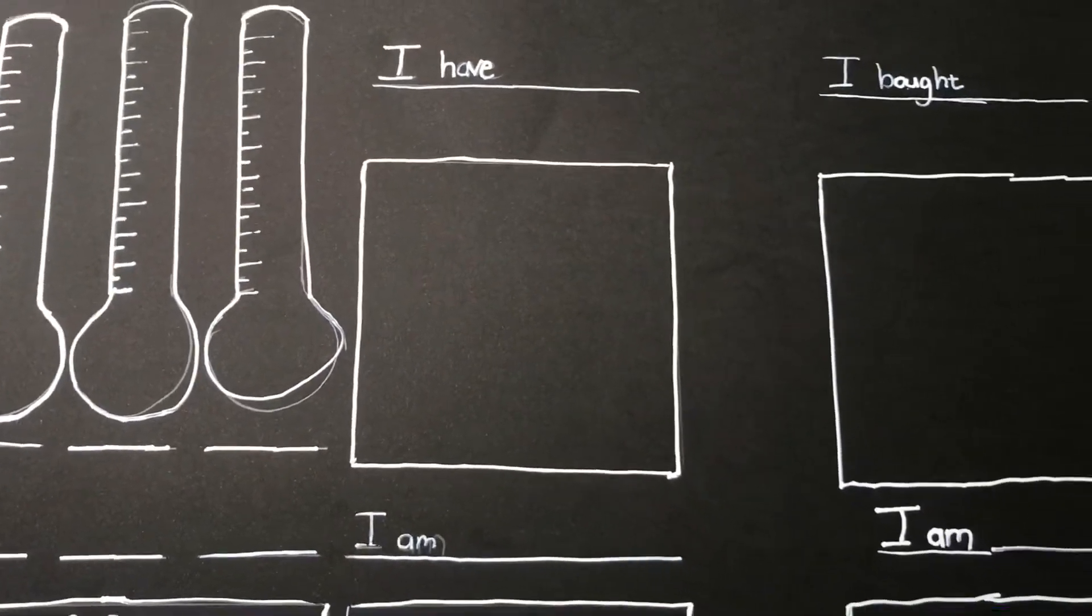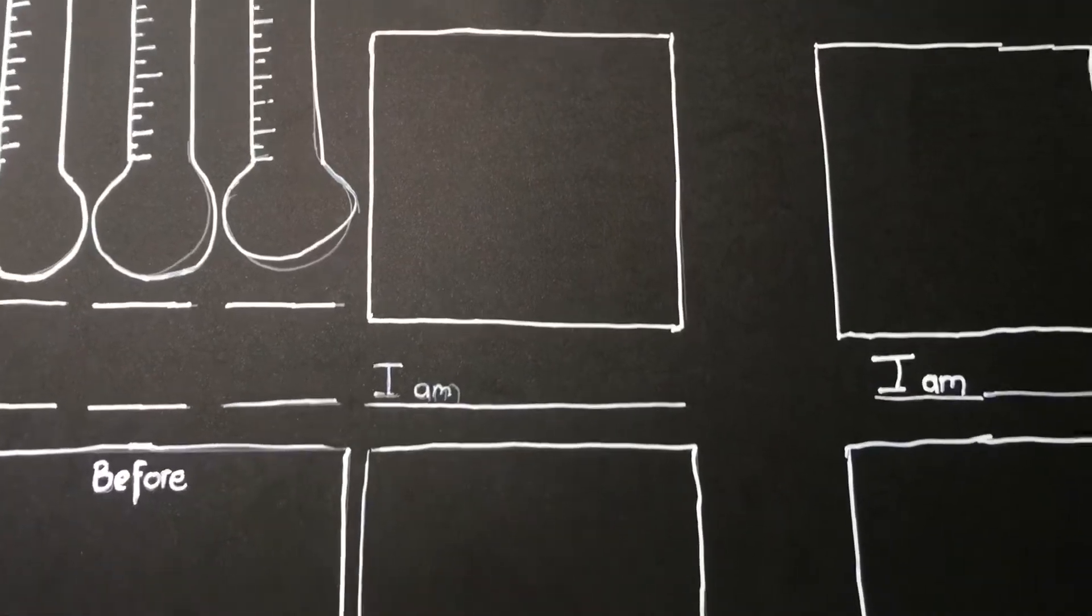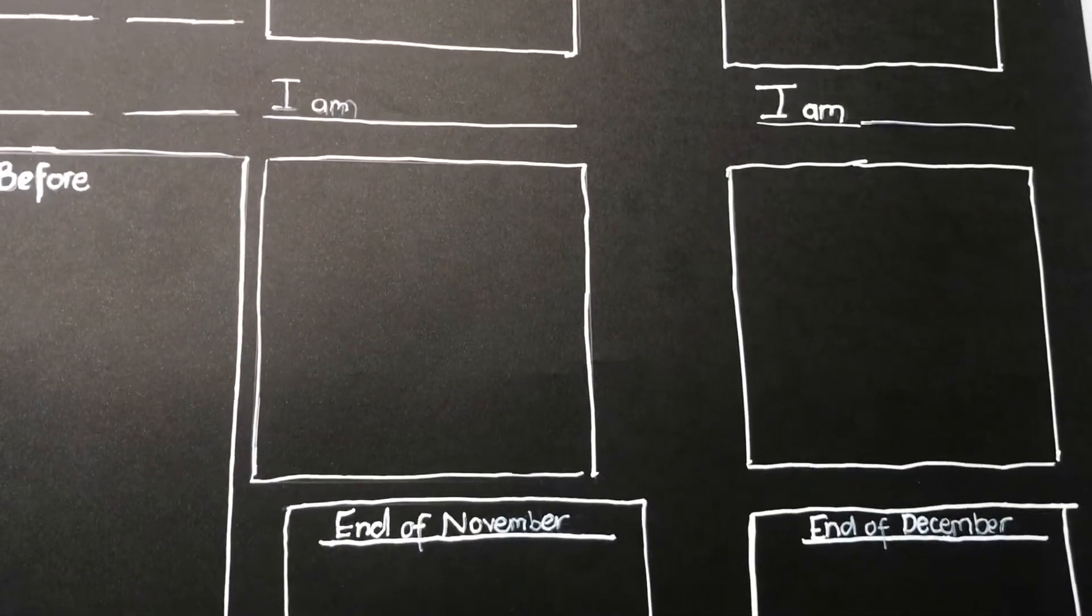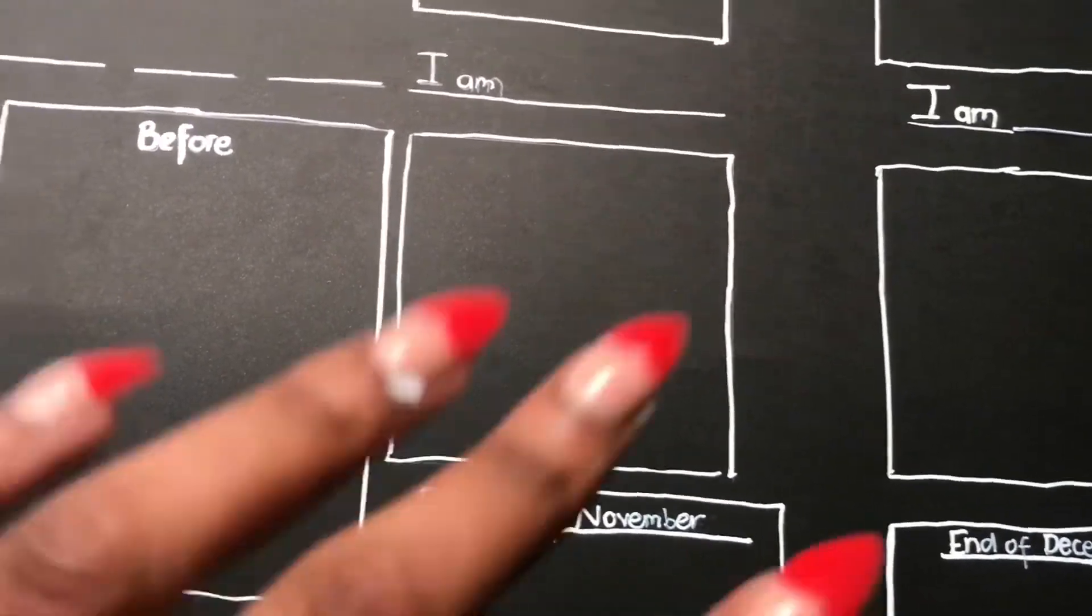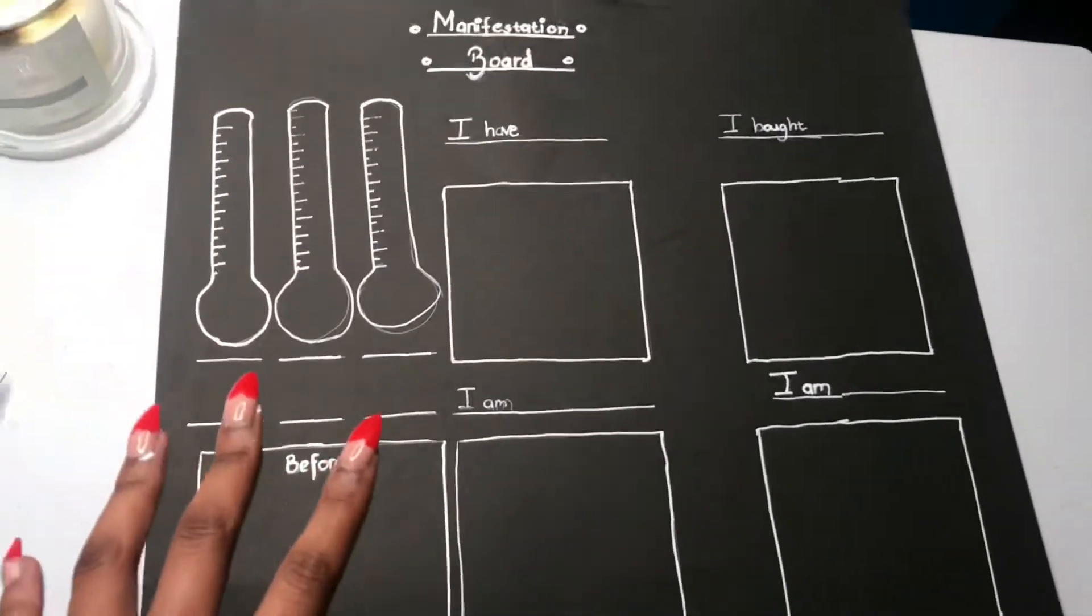So I have affirmations at the top of each box because the boxes are going to be used for pictures, but the affirmations at the top are going to be used for the things that I want. So there and there works together.